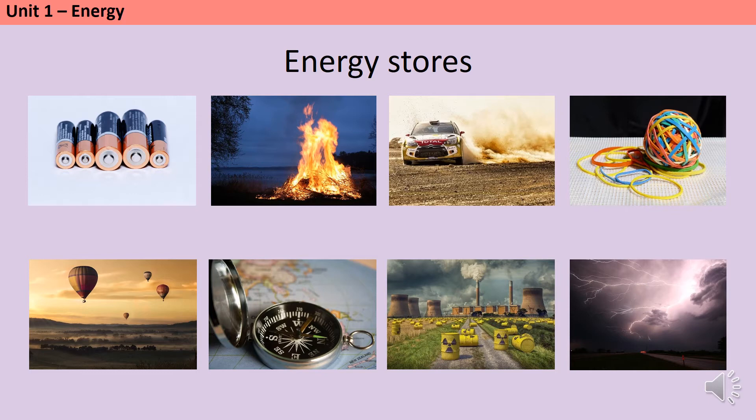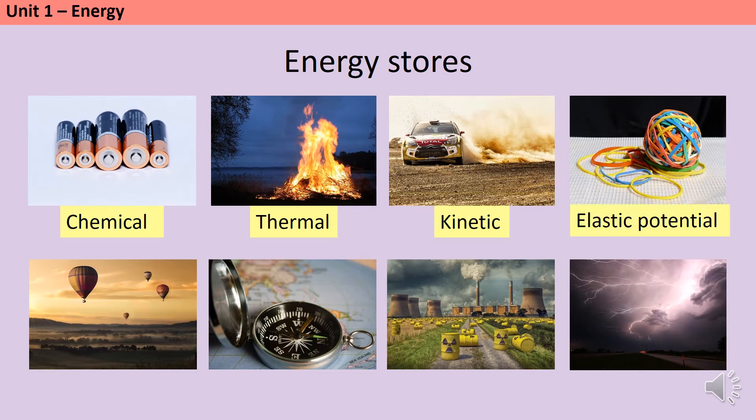Foods, fuels and chemical cells store energy chemically. Hot objects store energy thermally, as a mixture of kinetic and potential energy. Kinetic energy is what we call the store that's found in moving objects. Objects that can elastically deform, like elastic bands and springs and hair ties, store elastic potential energy while they are deformed. Objects that have been lifted up store gravitational potential energy.